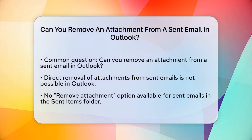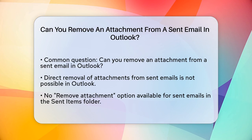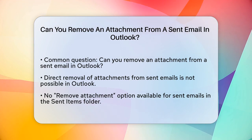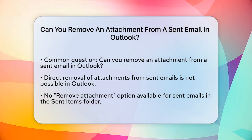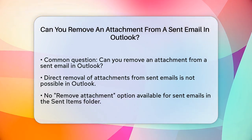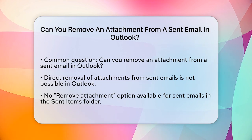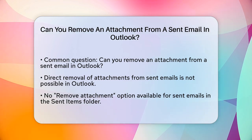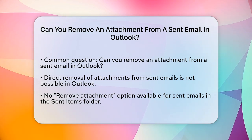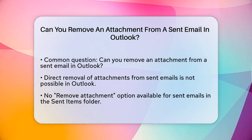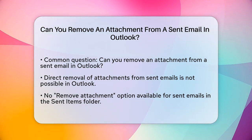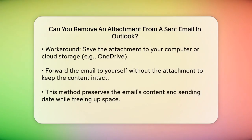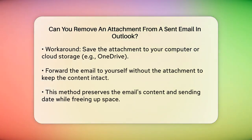To start, let's look at the manual method. In Outlook, you can't directly remove an attachment from a sent email without deleting the email itself. When you go to your Sent Items folder, find the email with the attachment you want to remove, and try to delete the attachment, you'll find that there's no direct Remove Attachment option for sent emails.